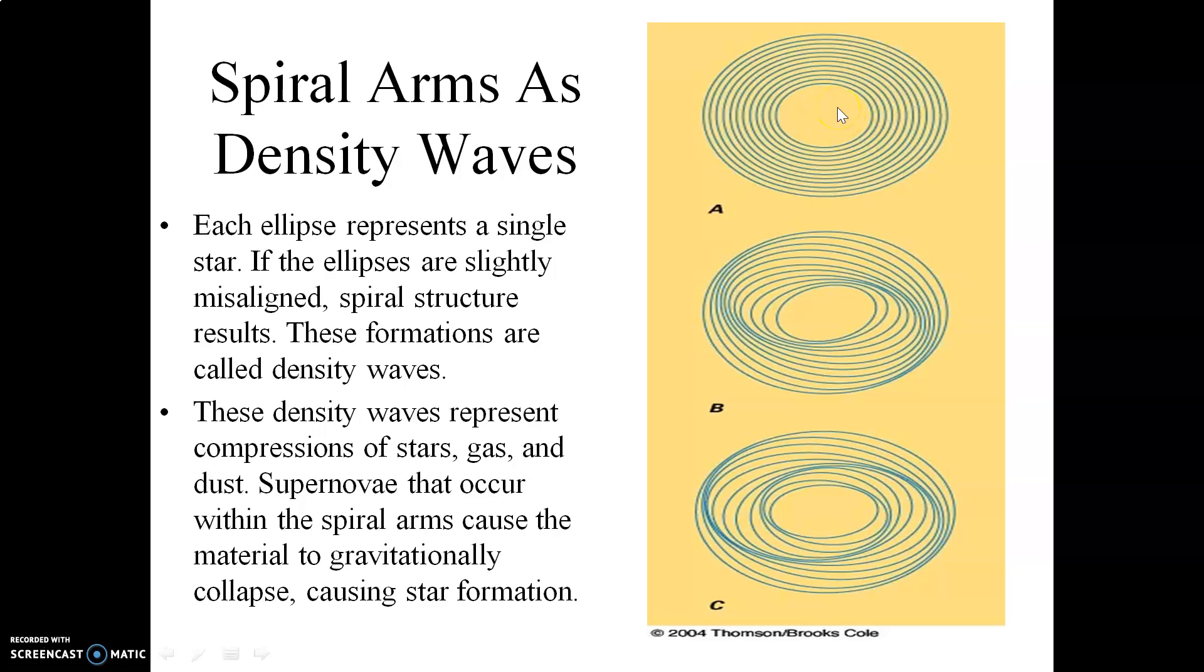If all of those ellipses are aligned with each other, then you basically see something that looks more or less like a phonograph record. However, if the ellipses are tilted with respect to each other a little bit, say here and here, notice that then there are portions here in these simple drawings where the ellipses bunch together, and then where the ellipses bunch together, those then form the spiral arms themselves.